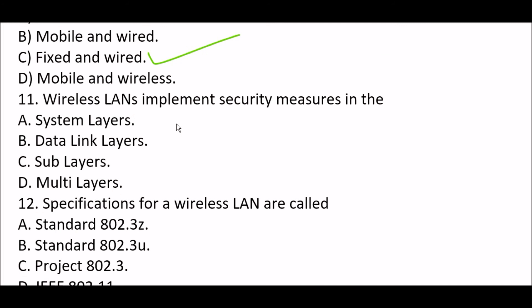Next question: Wireless LANs implement security measures in the blank. Option A: system layers. Option B: data link layers. Option C: sub layers. Option D: multi layers. The right answer is Option B, data link layers. Wireless LANs implement security measures in the data link layers.